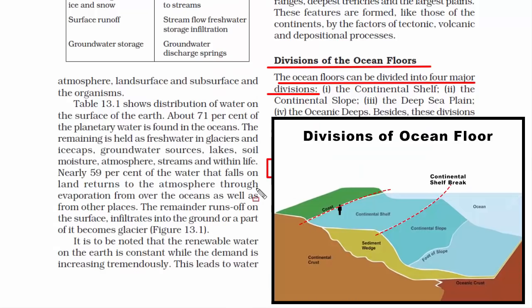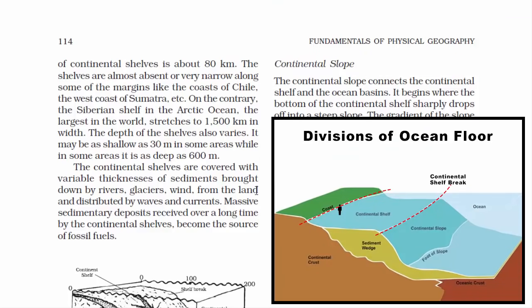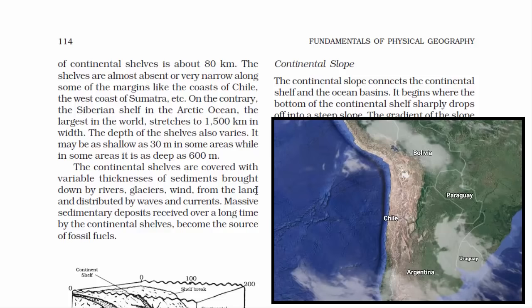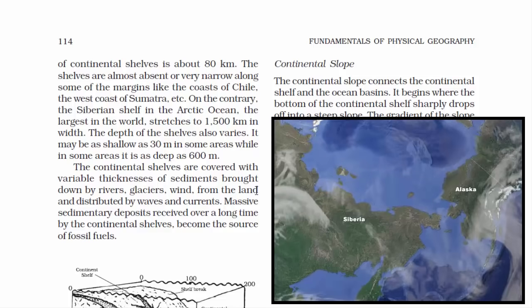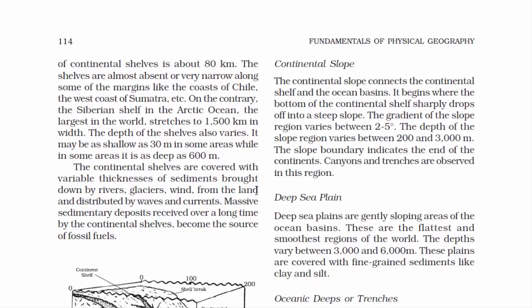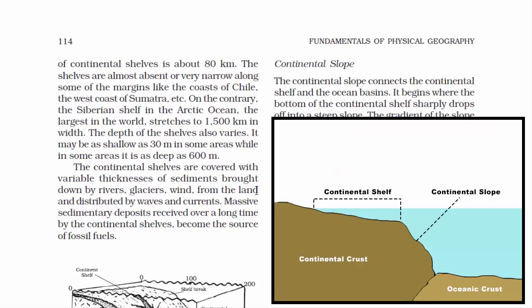The continental shelf is the shallowest part of the ocean. The width of continental shelves varies — the average is about 80 kilometers. Some shelves are almost absent or very narrow, like the coast of Chile and the west coast of Sumatra. On the contrary, the Siberian shelf in the Arctic Ocean, the largest in the world, stretches to 1,500 kilometers in width. Depth can be as shallow as 30 meters or as deep as 600 meters.